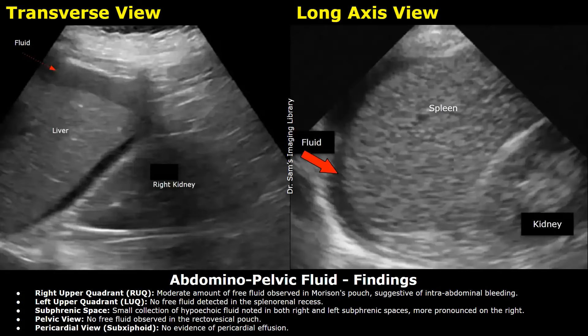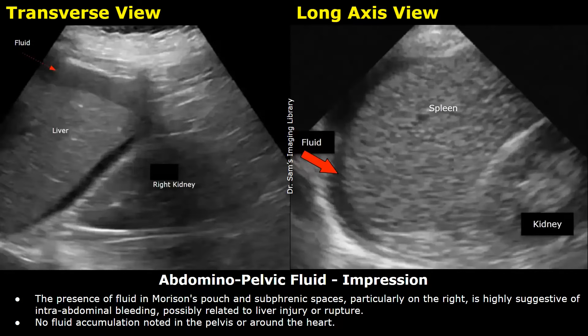Impression: The presence of fluid in Morrison's pouch and subphrenic spaces, particularly on the right, is highly suggestive of intra-abdominal bleeding, possibly related to liver injury or rupture. No fluid accumulation noted in the pelvis or around the heart.